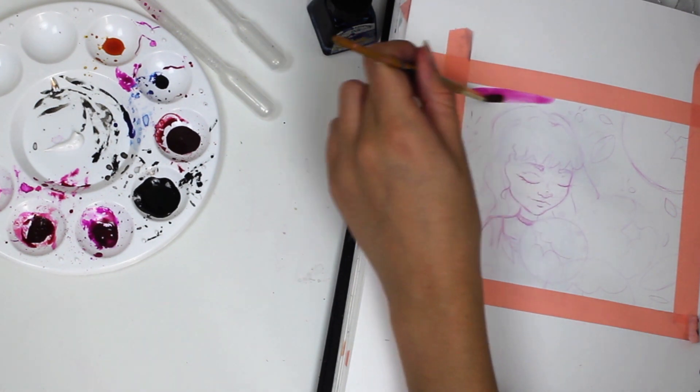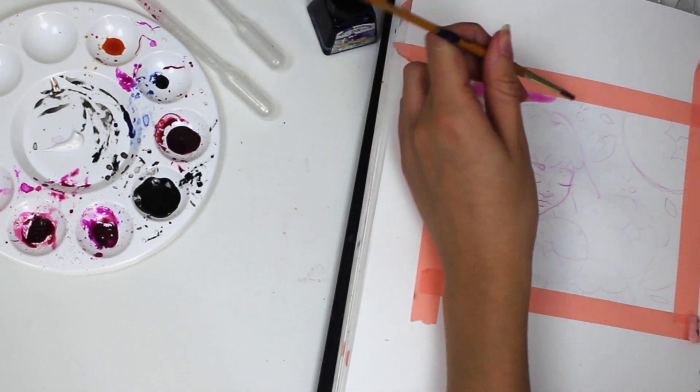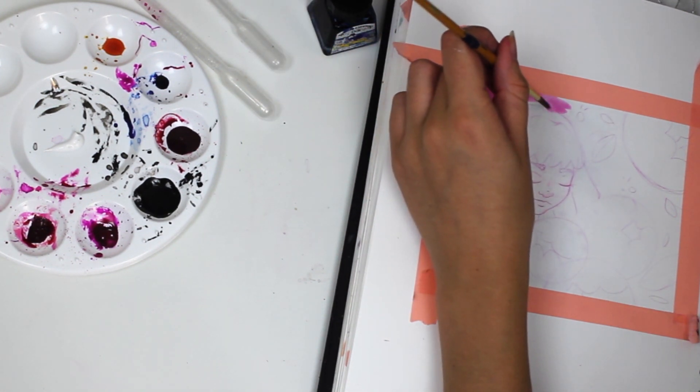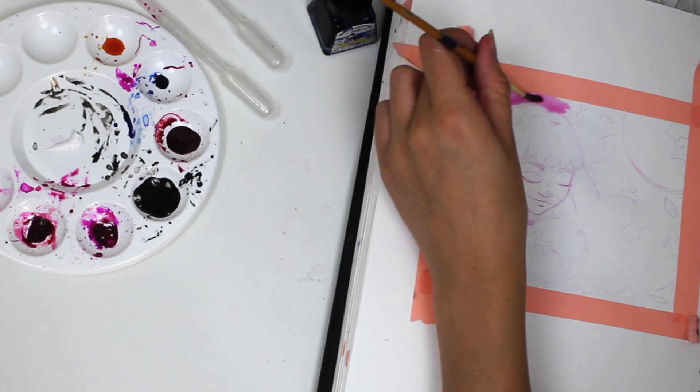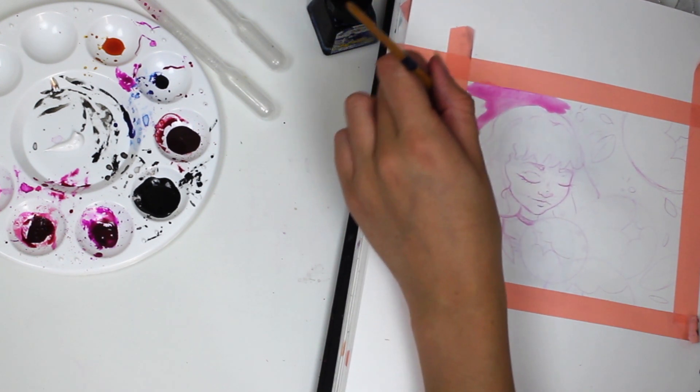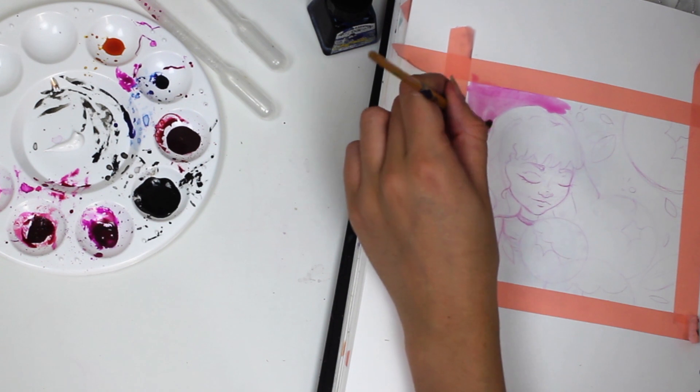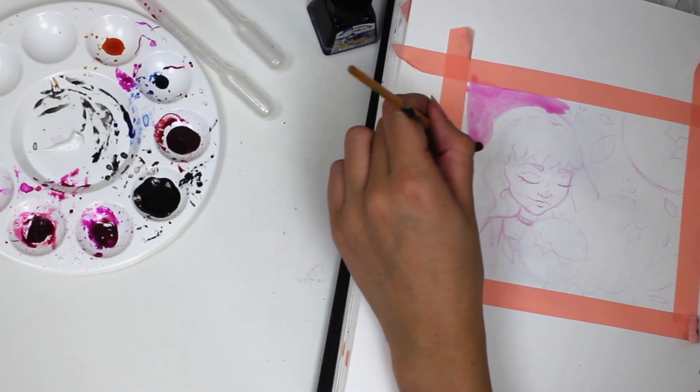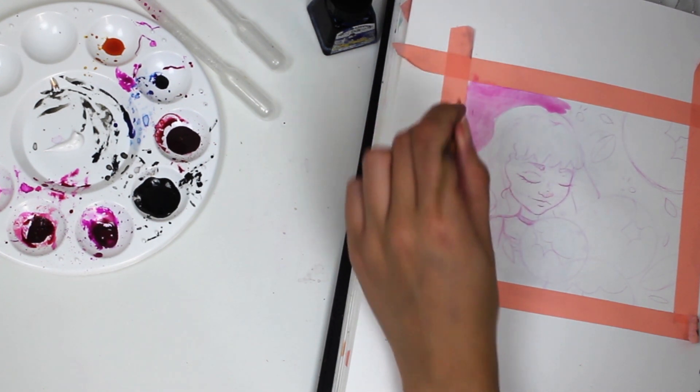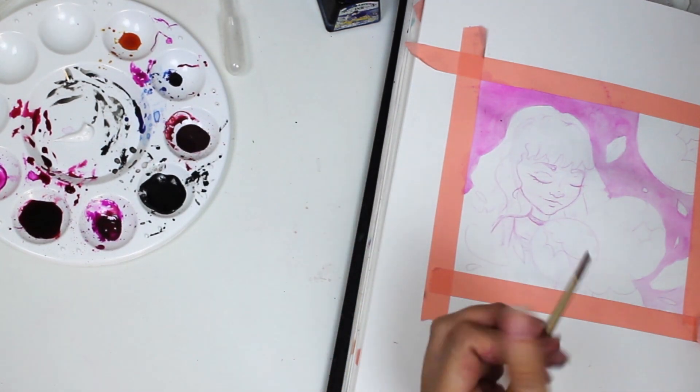For this last illustration I mixed some of the inks together to make this pink color, and I decided that I was going to use all of it to color the picture and then use a black outline. This is because I wanted to experiment with how I could make varying tones with one color.